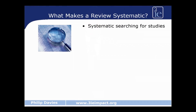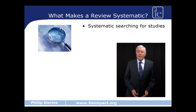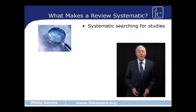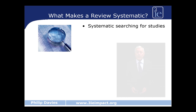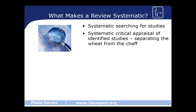So what makes a systematic review systematic? First of all, it's the way that we go about searching for evidence. We are trying to be as exhaustive and comprehensive as possible to identify as many studies as possible in whatever area we are interested in that have been published in the last 10 or 20 years. We are also systematic in the way that we critically appraise these studies, separating the higher quality from the lower quality — the wheat from the chaff.